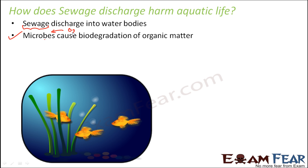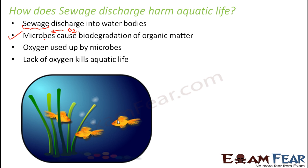For these microbes to eat up the organic matter, they need oxygen, because aerobic microbes do this biodegradation. So they will utilize all the oxygen present in dissolved form in the water. Since all the oxygen will be used up by the microbes, what will be left for the aquatic plants and animals? Fishes also cannot survive without oxygen. So gradually, lack of oxygen will start killing the aquatic life. Therefore, care should always be taken that sewage should never be directly disposed into water bodies.